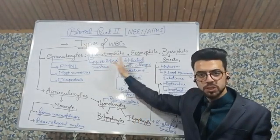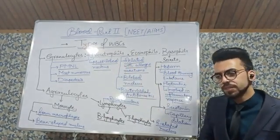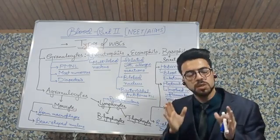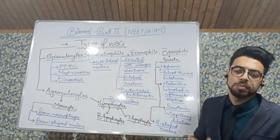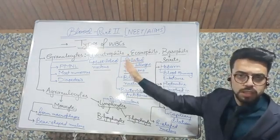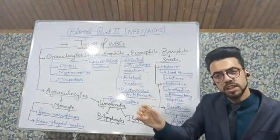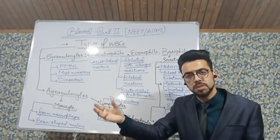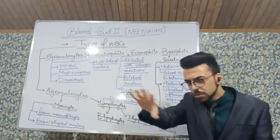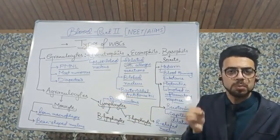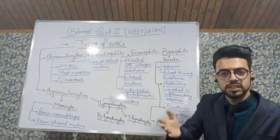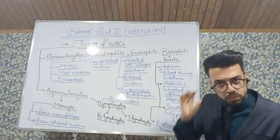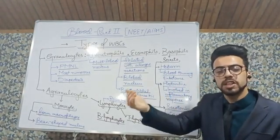Now let's talk about the neutrophil. Among all WBC cells, the neutrophil is the fastest, and that is the reason it is the first WBC cell to reach the site of infection. In comparison to other types, it is the most numerous and the most mobile.